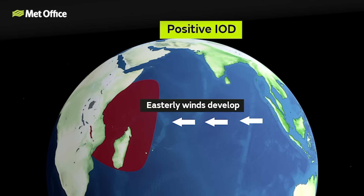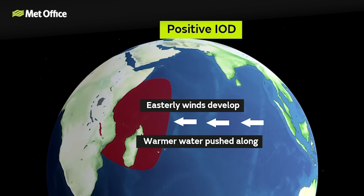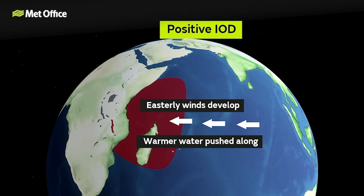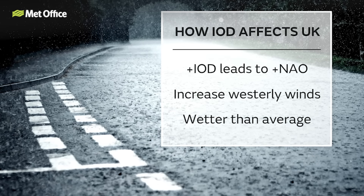In a neutral phase, the IOD has little influence on global weather. In a positive IOD, waters near East Africa become warmer than usual, while waters near Indonesia cool. This can shift tropical thunderstorm patterns westward, affecting atmospheric circulations globally. When this happens, the jet stream over the North Atlantic can strengthen, increasing the chance of mild, wet and windy weather in the UK, especially when other patterns like ENSO are active.